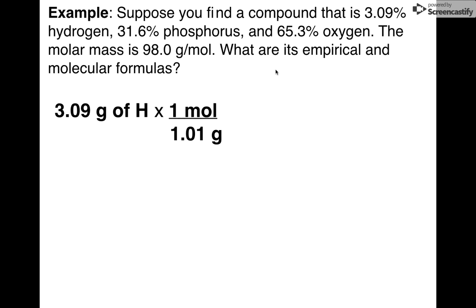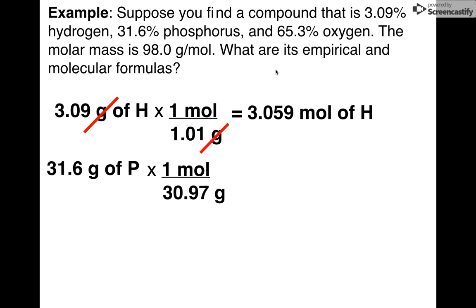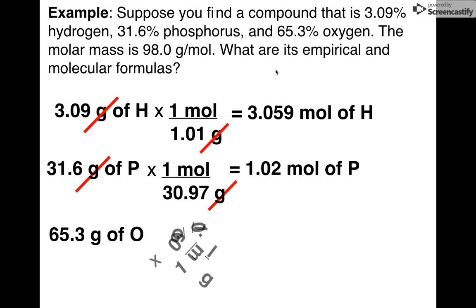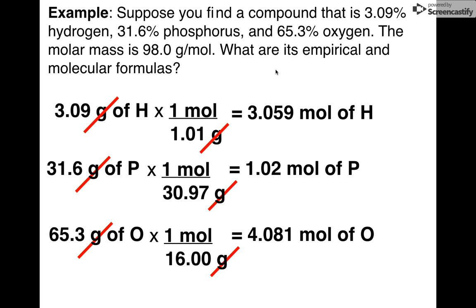Hydrogen to start with. What's the molar mass of hydrogen? 1.01. I get 3.059 moles of H. Let's do the next one. Phosphorus. What's the molar mass of phosphorus? 30.97 according to the periodic table. Let's divide that out. 1.02. 65.3 grams of oxygen. We already know that's 16 because we've used oxygen so often. Notice what I get: 4.081 moles of oxygen.